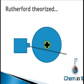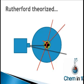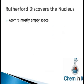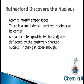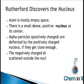Rutherford theorized that there must be a small, dense center of the atom that contained all of its positive charge, and that the positive alpha particle would be repelled by this positive center when it came into contact with it. Rutherford called this positive center the nucleus. He believed that the atom was not a bunch of positive stuff with negatively charged electrons embedded within it, but rather it was mostly empty space. The nucleus was at its center — a small, dense concentration of positive charge and mass. Alpha particles are deflected by the positively charged nucleus if they get close enough, and the negatively charged electrons were scattered outside the nucleus.